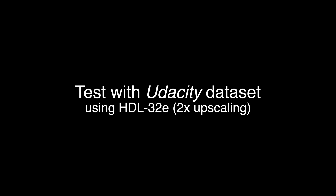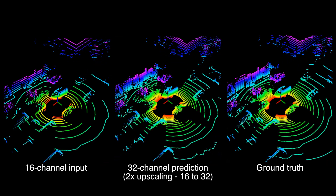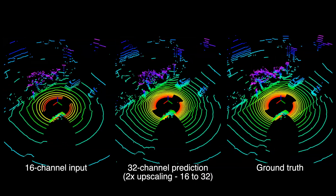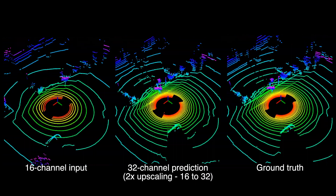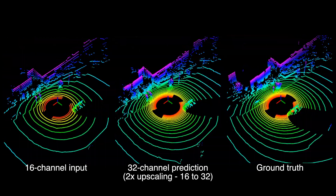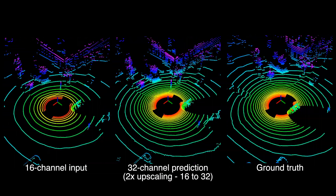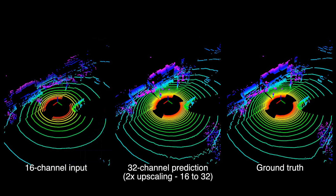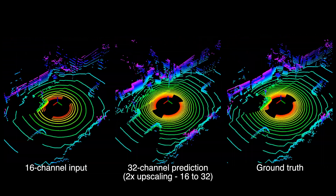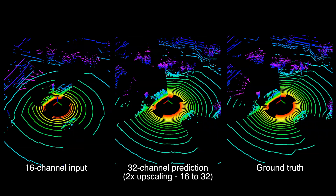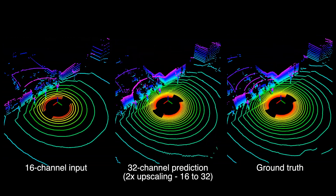We also validate our approach on the Udacity dataset. Here, a Velodyne HDL32E is used for data recording. The sensor was mounted horizontally on top of a car driving in Mountain View, California. Similarly, we can perform two times or four times upscaling predictions. The low-resolution point cloud shown on the left is the input to the neural network. The high-resolution point cloud shown in the middle is the output of the neural network. The high-resolution point cloud from a real LiDAR is shown on the right for comparison.